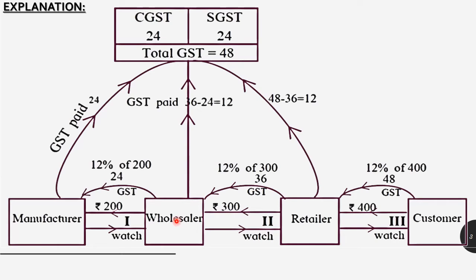From the wholesaler, the watch goes to the retailer. The retailer pays rupees 300 as cost price, and again 12% GST applies: 12% of 300 is rupees 36. So the retailer pays rupees 36 to the wholesaler as GST. Now the wholesaler already paid rupees 24 in tax to the manufacturer, so he keeps that 24 from the 36 and pays only the remaining rupees 12 to the government — that is 36 minus 24 equals rupees 12.